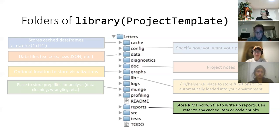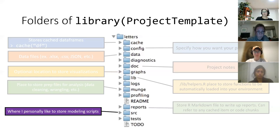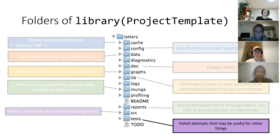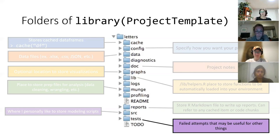I don't really use the profiling folder, but I do use reports — here I store my R Markdown file to write up reports. I can refer to any cached item or any code chunk without any problem, so I don't have to type it all out. In the src folder, I personally store my modeling scripts because I like them separate from the munging folder — especially if I want my munging folder to run automatically. I don't always want models to run automatically, especially really big ones. And then for the test folder — I don't know if you fail when you code as much as I do, but I sure do — this is where I put those files. Some projects I'm not allowed to put on Git, so I'll put them in the test folder just to keep them.